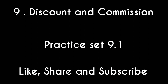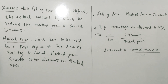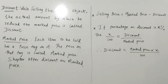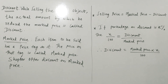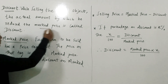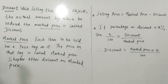Dear students, you may have seen advertisements such as monsoon sale, summer sale, up to 50% discount, up to 60% discount, or different schemes in the form of goods set as discount. In such sales, the discount is offered on various goods. While selling an object, the actual amount by which the shopkeeper reduces the mark price is called a discount.